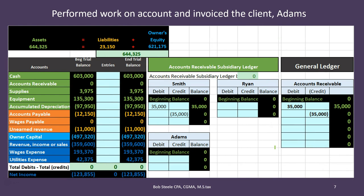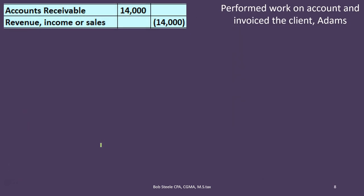If we have another transaction — perform work on account and invoice client Adams. We did work for Adams and billed them. Is cash affected? No, cash isn't affected in this case. We did work but we didn't get the cash — we got an IOU. Still an asset; assets have debit balances, so we're going to debit the receivable. What's going to be the other side? Why will people be paying us in the future? Because we did work and earned revenue. So the credit will go to revenue. Revenue has a credit balance; we're going to increase it with a credit. We debit accounts receivable, increasing the IOU asset, and credit revenue, increasing the amount of revenue earned.